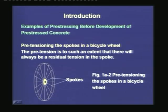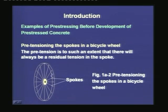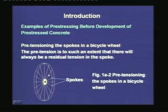The second example is the pre-tensioning of the spokes in a bicycle wheel. Each spoke is pulled and tightened so that there will always be a residual tension in the spoke. When the rider rides the cycle, the weight creates some compression in the spoke, but since the original tension is higher than this compression, each spoke retains a residual tension.